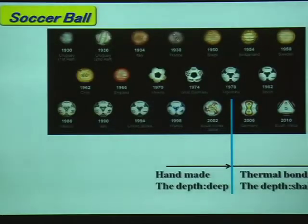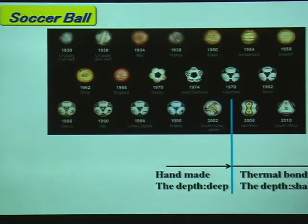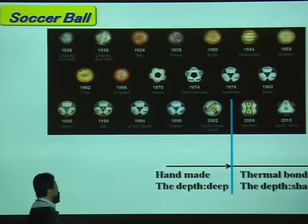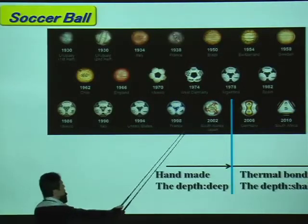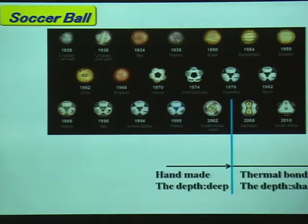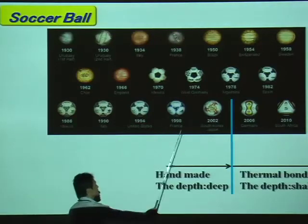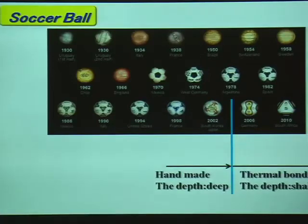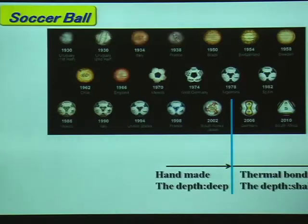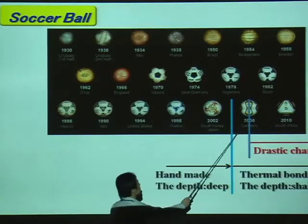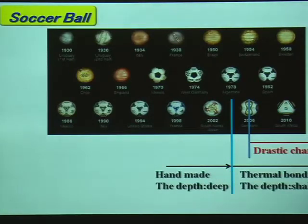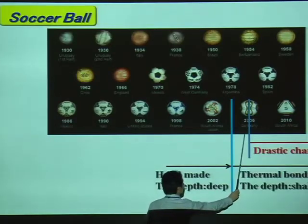Now we move to soccer. This is a picture of soccer balls used in the World Cup. The traditional soccer ball is composed of pentagons and hexagons. Up to 2004, the ball was handmade, and therefore the depth of the seam was deep. But after 2004, thermal bonding technique was developed, so the depth of the seams became shallow. And in 2006, there was also a drastic change in the geometrical shape on the surface of the ball.